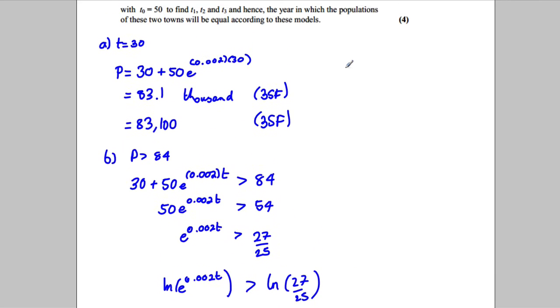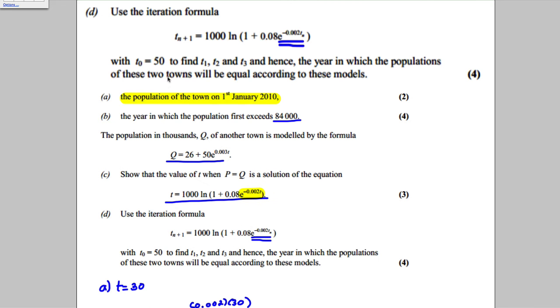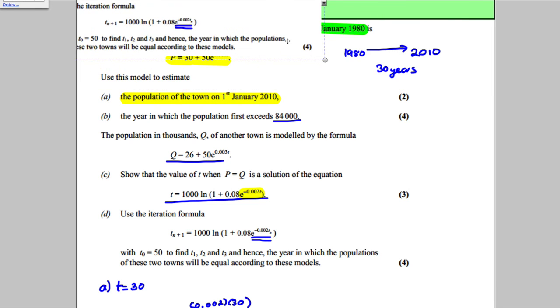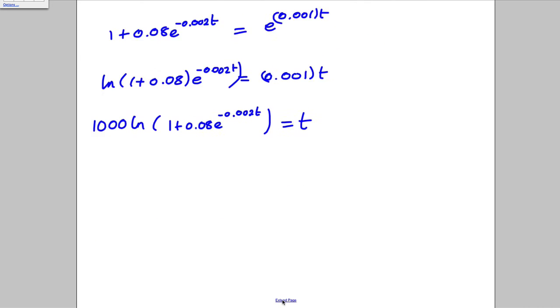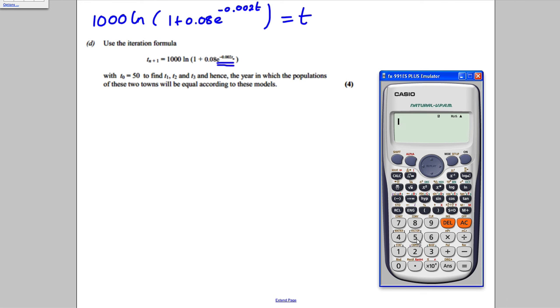So going up here for the last part, I'm actually just going to take a quick photograph of this last part, just so I can look at it without scrolling up. So the last part, going down here like this. So it says use this iterative formula with T0 as 50 to find T1, T2, and T3. And hence the year and population of these two towns will be equal according to the model. So we're using this formula here with T0 as 50. So get your calculator out, write 50 equals. That remembers it in answer mode.